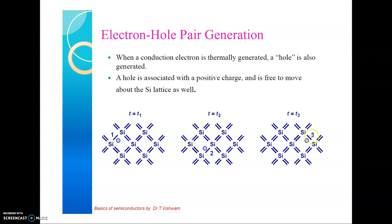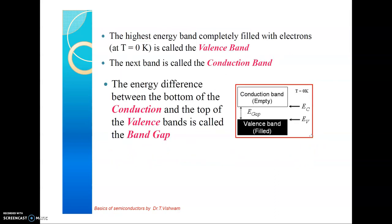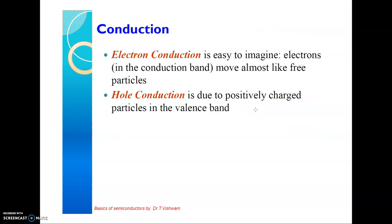The highest energy band completely filled with electrons is called the valence band. Above the valence band is an empty band called the conduction band. The difference between the valence band and the conduction band is defined as the energy gap. The energy gap for silicon is 1.1 electron volts, whereas for germanium it is 0.76 electron volts. Holes are positive charged particles whereas electrons are negative charged particles.